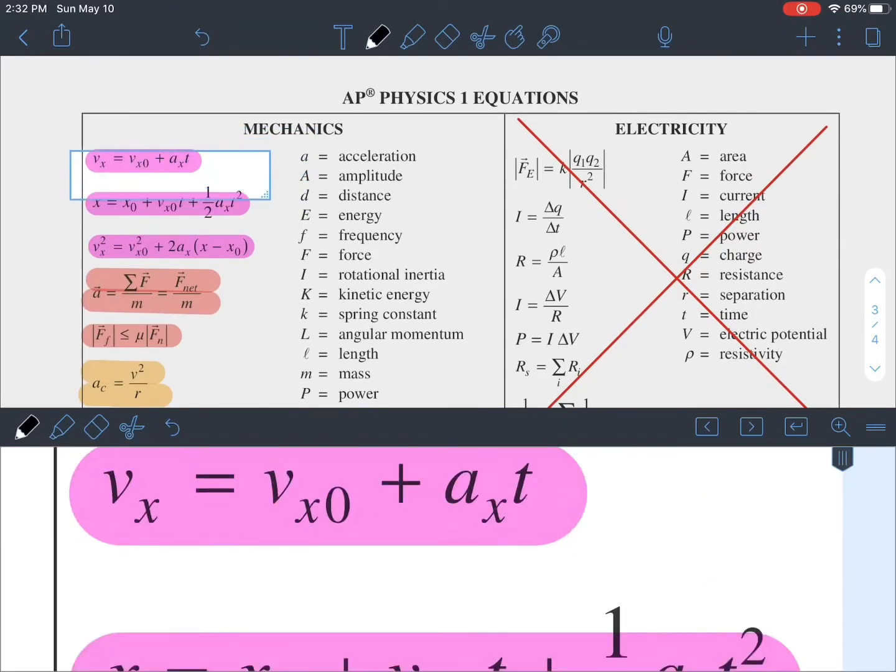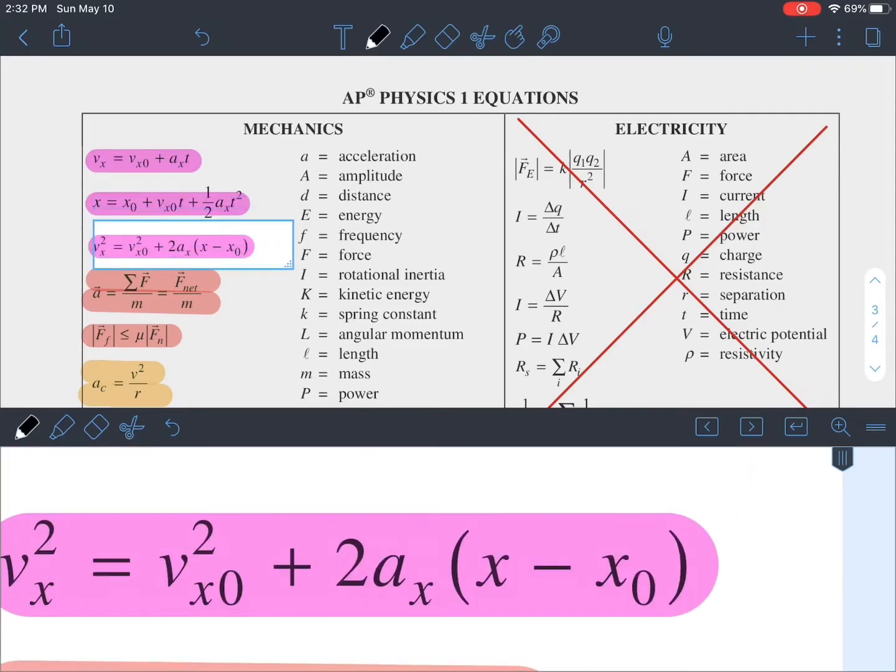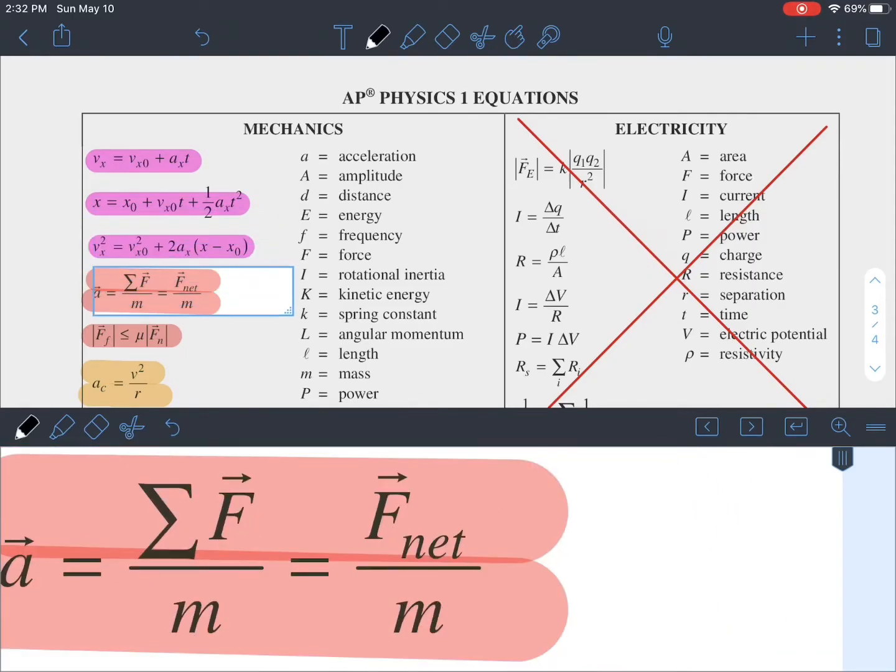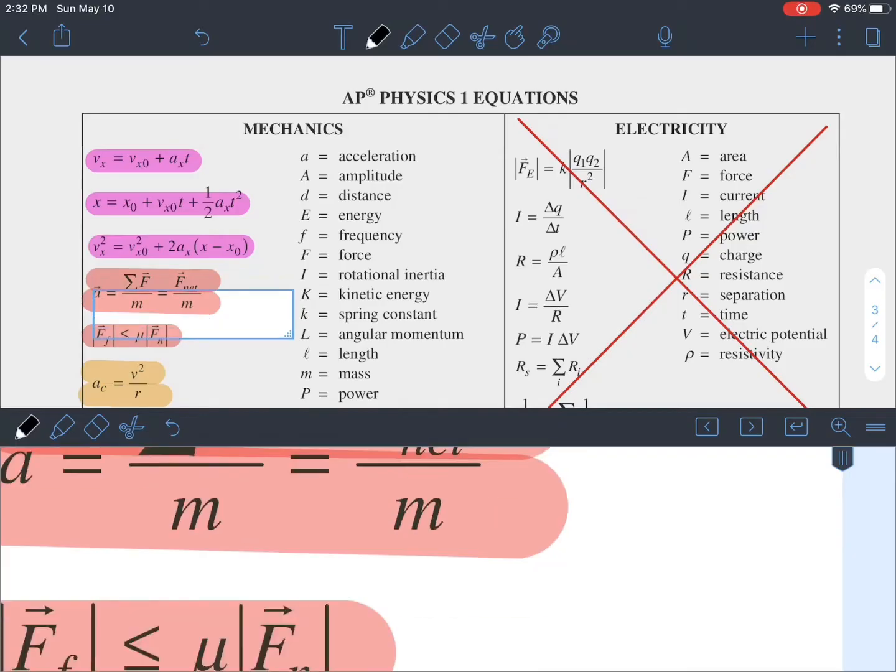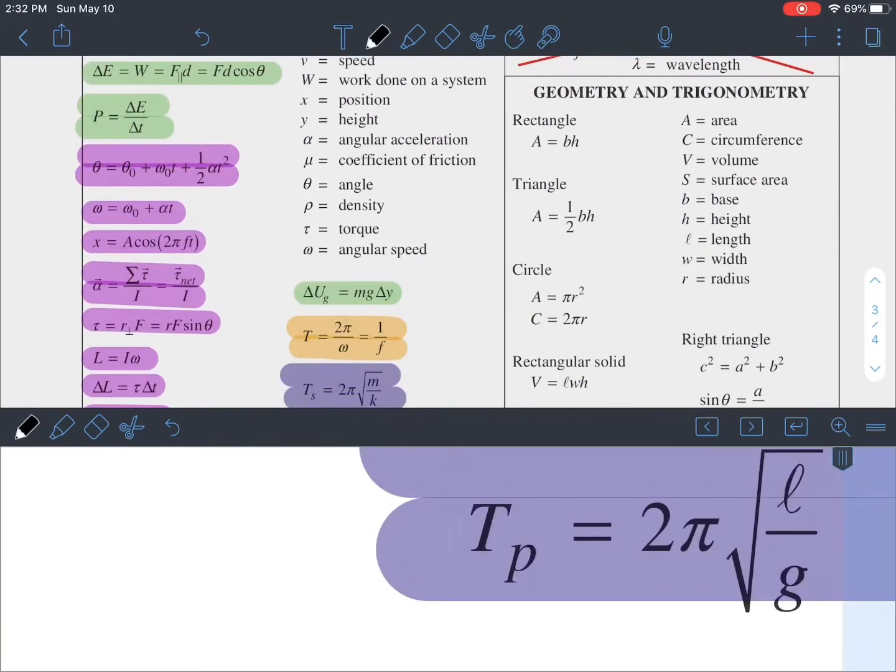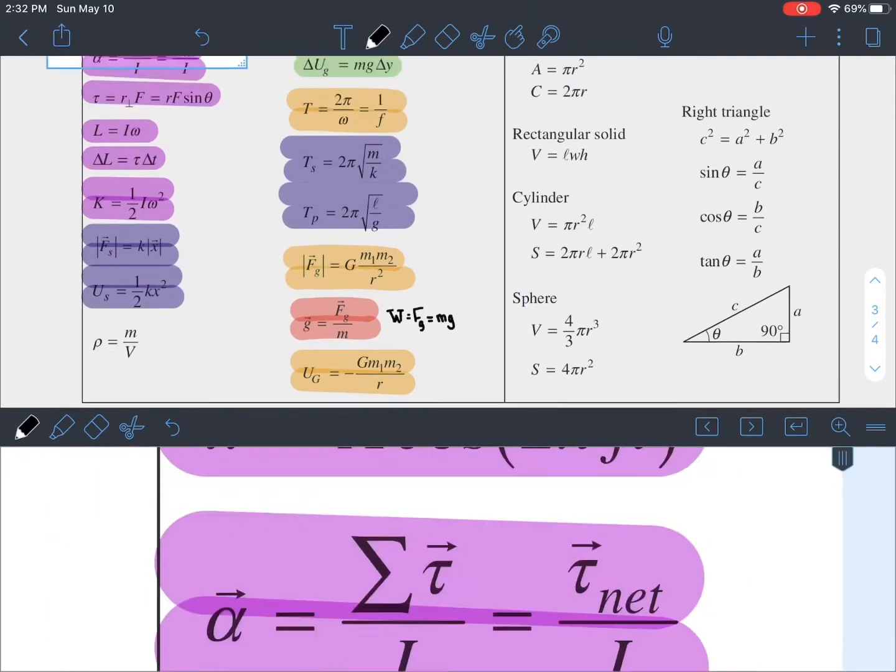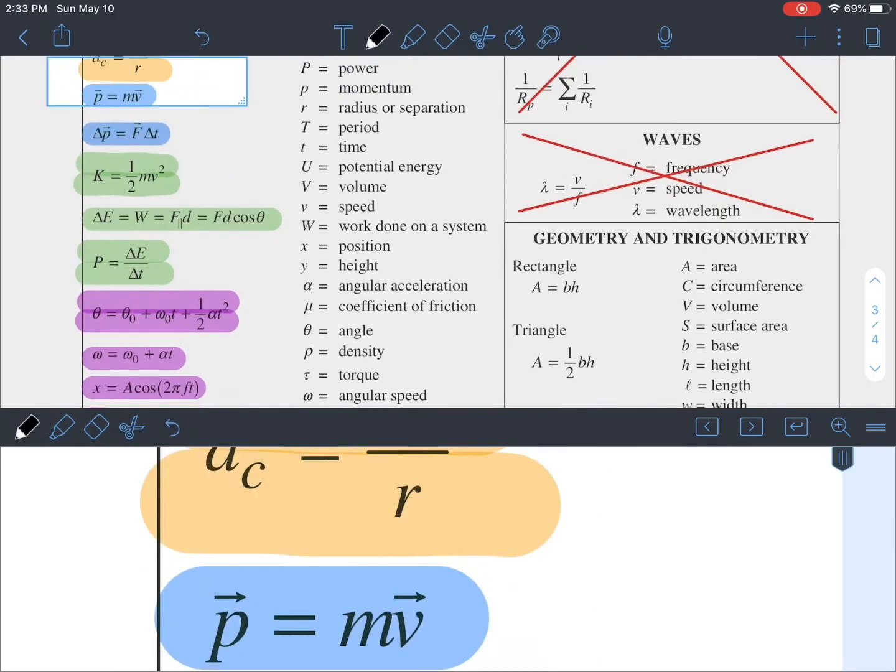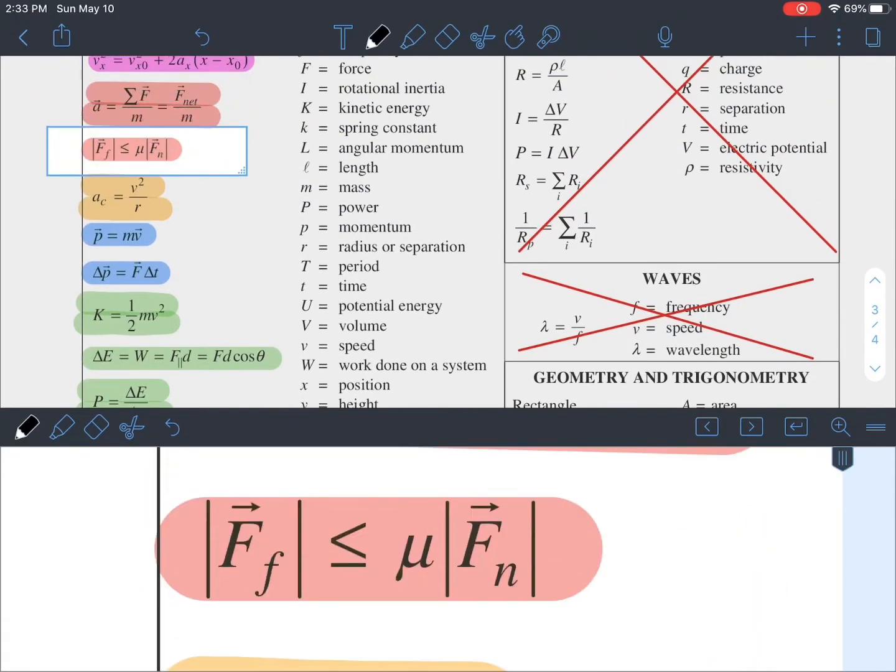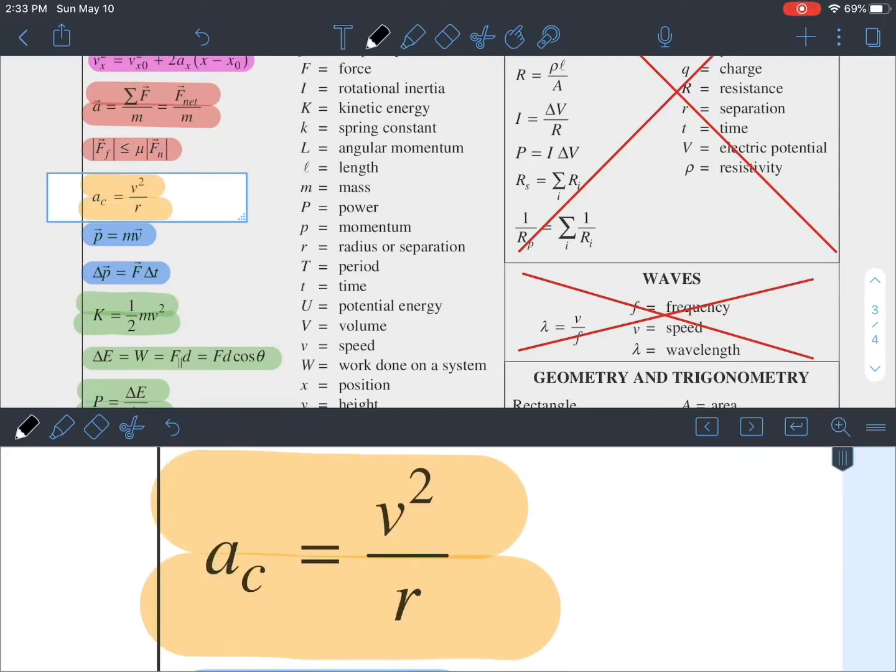The first three here are literally the kinematic equations. You can also use them for the y direction. You would just do a little subscript of y instead. Your force equations in red, for some reason they put your weight down here. So this is just a rearranged equation of f sub g equals mg, which is also weight. That's your f equals ma. It's just rearranged. And that's your force due to friction is mu fn.